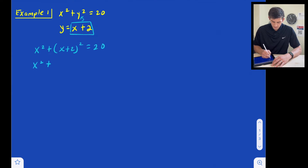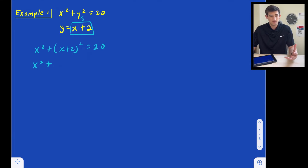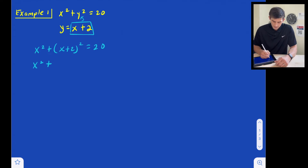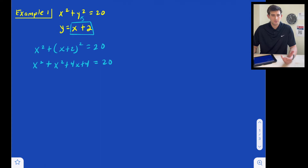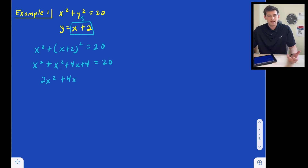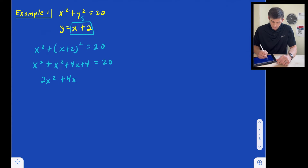So we get x squared plus, and now we are presented with the square of a binomial. If we remember how to expand x plus 2 quantity squared, we can do this pretty easily. If you forget, it's just x plus 2 times x plus 2, and you can FOIL. So this is going to be x squared plus 4x plus 4 is equal to 20. Now combining like terms, we get 2x squared plus 4x, and since I have a quadratic equation, I'm going to set this equal to 0. So subtracting 20, we get 2x squared plus 4x minus 16 is equal to 0.